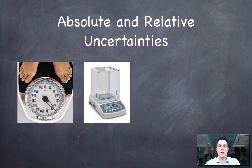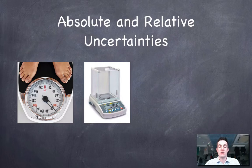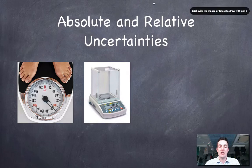Now, what's the difference between absolute and relative uncertainties? To cut a long story short, absolute uncertainties never change for a certain piece of equipment, whereas relative uncertainties can. Let's have a look at why that is.